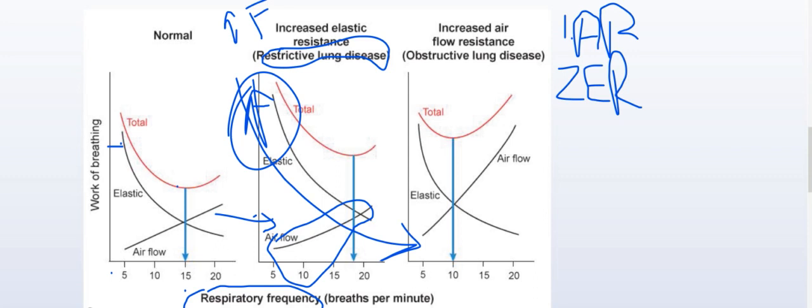The body has a compensatory response: it increases the respiratory rate. By increasing the respiratory rate, the body shifts to minimize the total work of breathing.